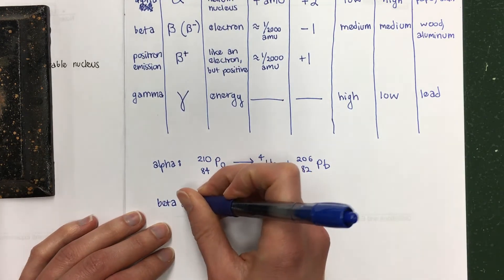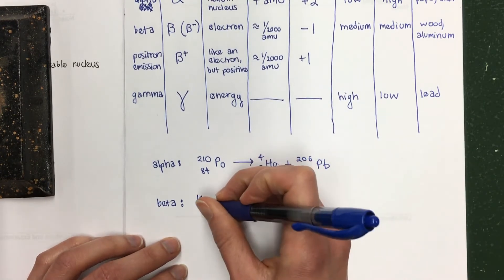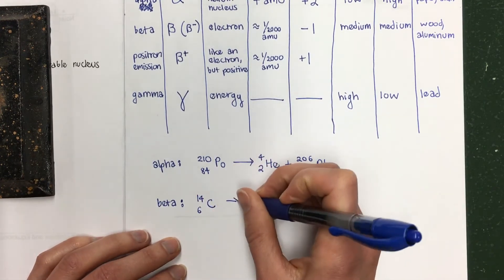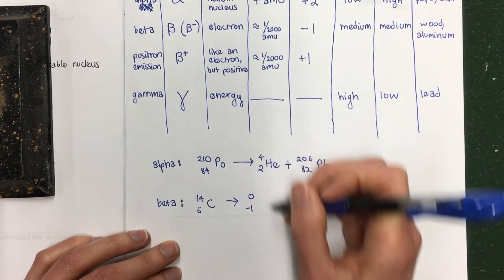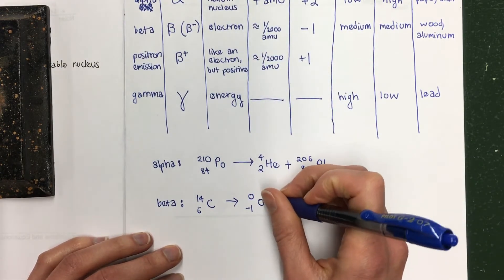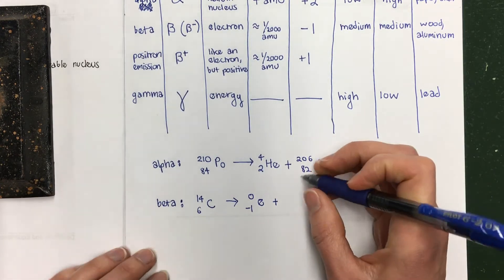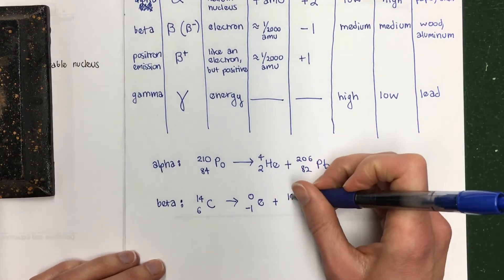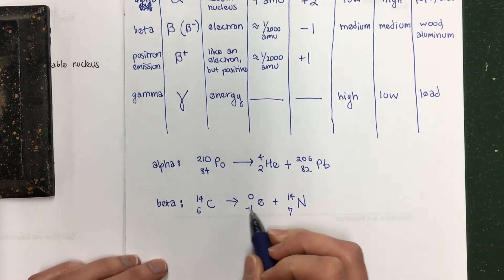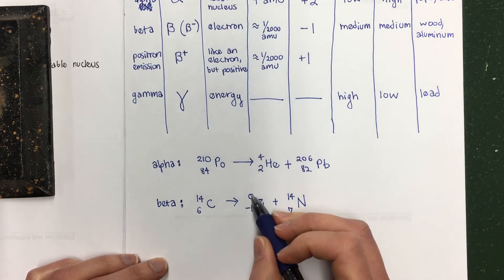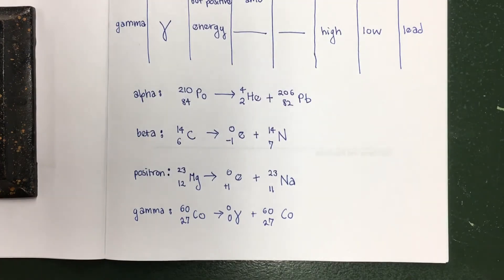Beta decay is going to look something like this. This is what carbon-14 does. So here's carbon. And then you can either see the beta symbol, or sometimes people will put an electron, E for electron, because a beta particle is like an electron. So if you see something with a negative particle that's got a mass number of zero, but a charge of negative one.